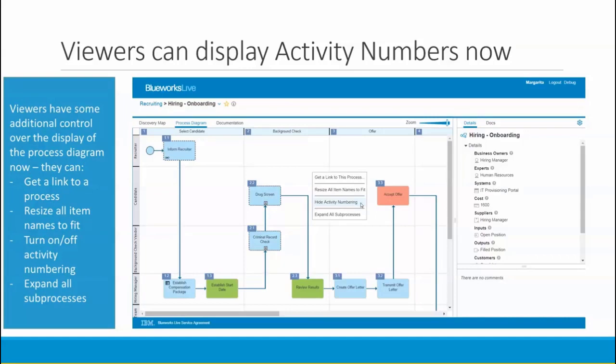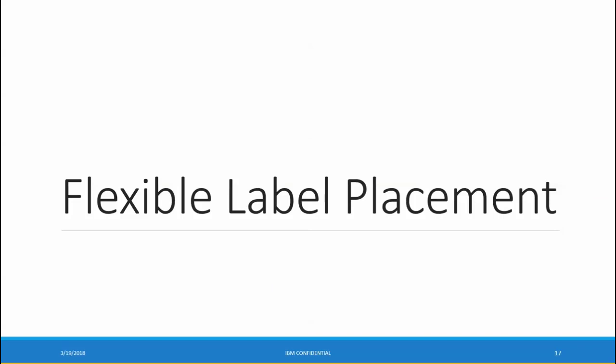One more thing about activity numbering: viewers can now turn it on by using the background menu on the process diagram, available by right-clicking on the background. They can also get a link to a process, resize activity names to fit, and expand all sub-processes — which they weren't previously able to do.